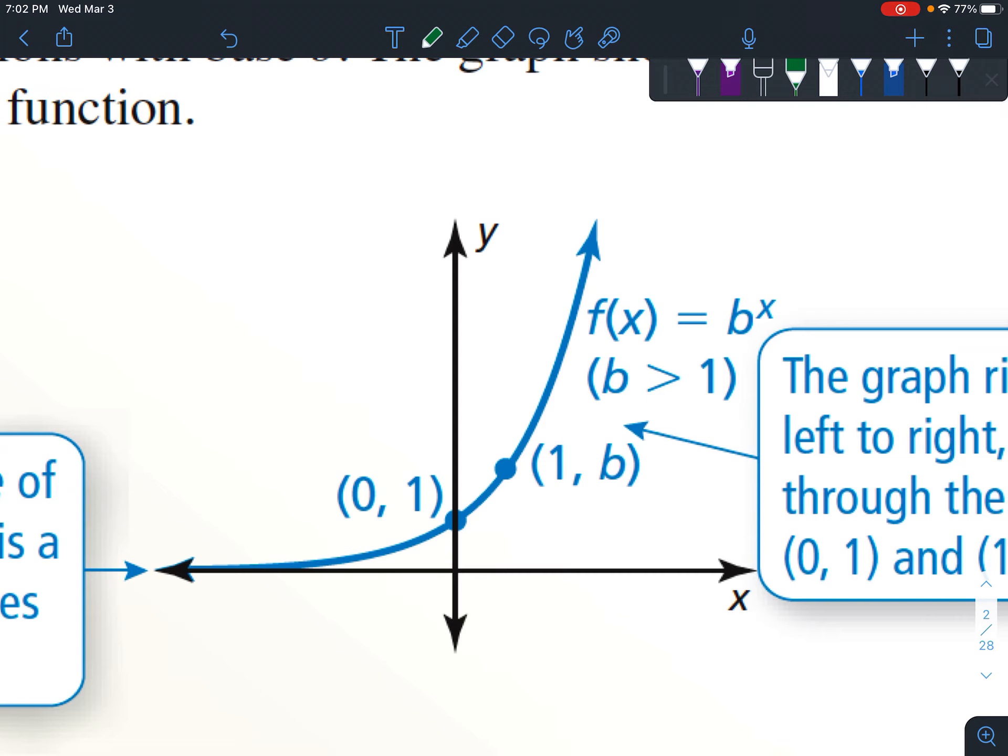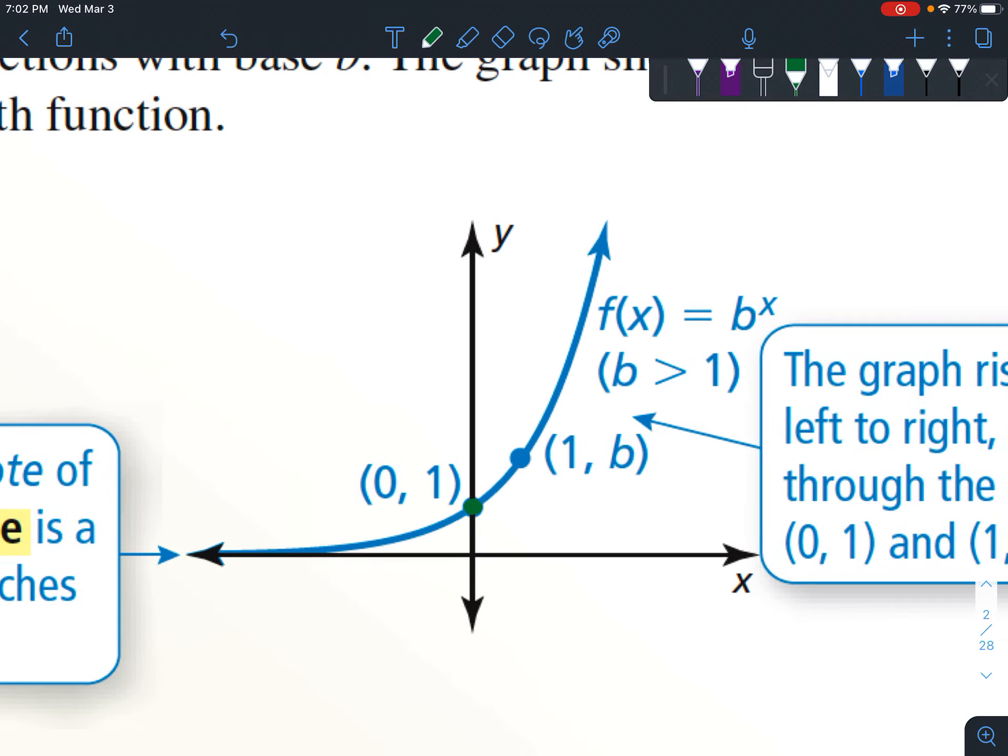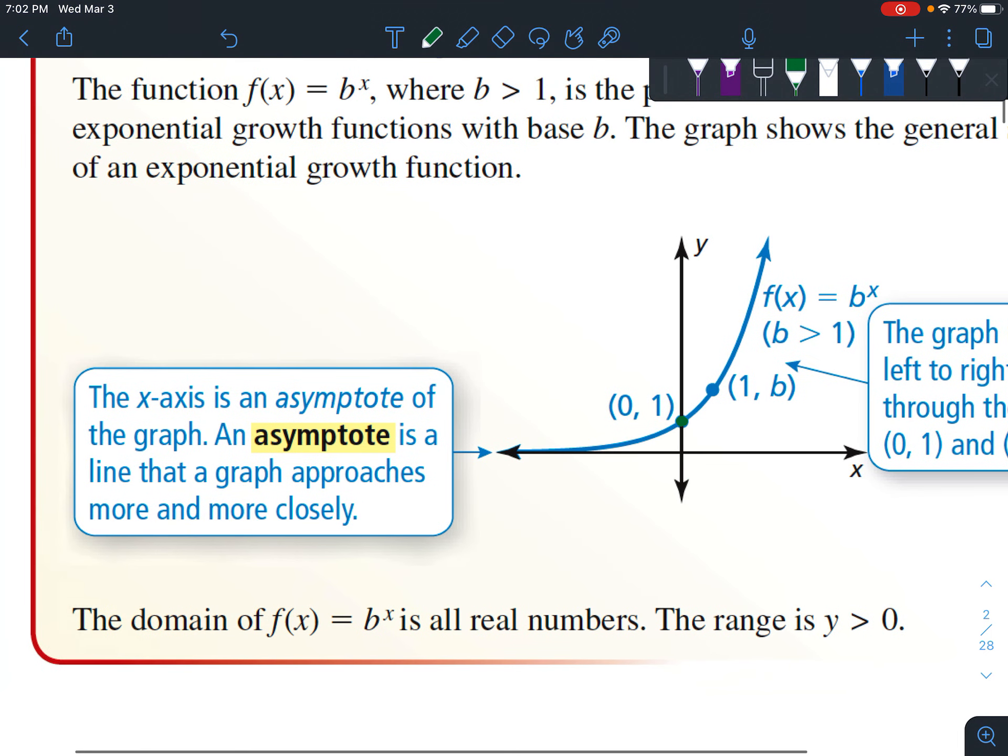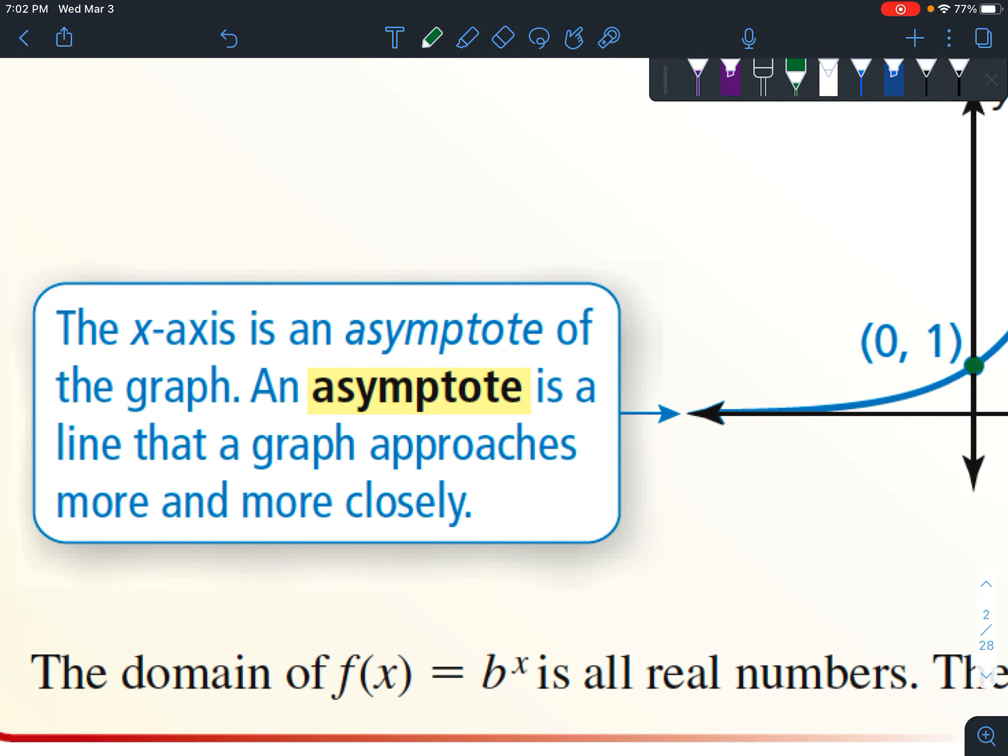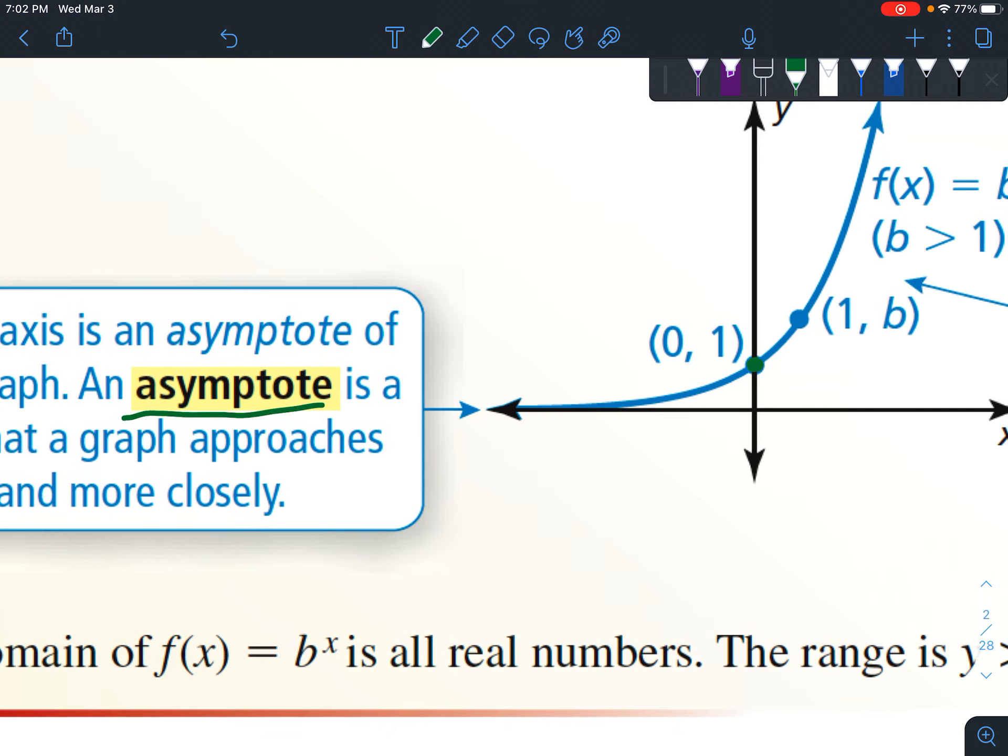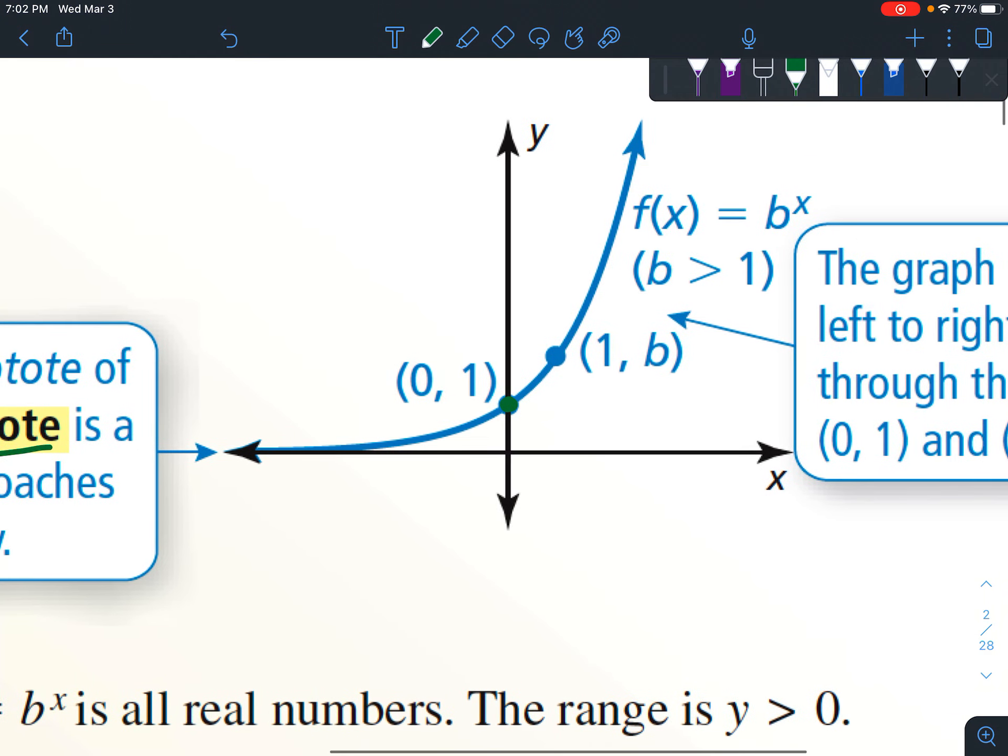The function is increasing. So this is a picture of that right here. And the parent graph says that it's always going to be 0, 1 right at this spot right here, and that's because if you raise something to the 0 power, then it's always 1. But there's other transformations that can happen. And then another important feature is there's something called an asymptote, and that's a line that the graph gets really, really close to, but it never quite touches.